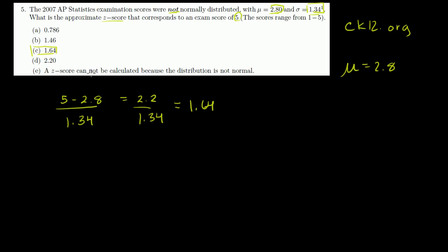And I think the only tricky thing here might have been you might have been tempted to pick choice E, which says a z score cannot be calculated because the distribution is not normal. And I think the reason why you might have had that temptation is because we've been using z scores within the context of a normal distribution.